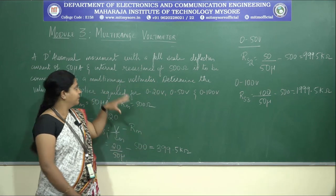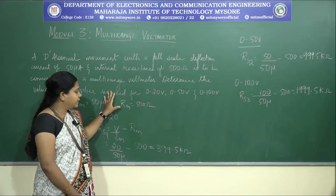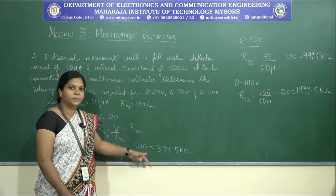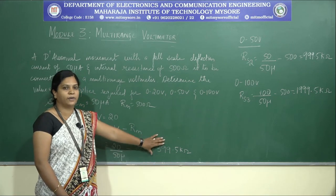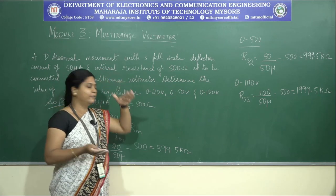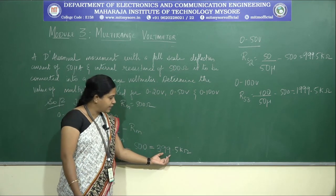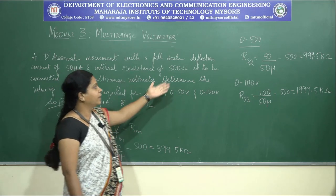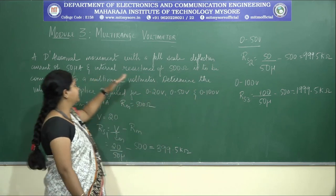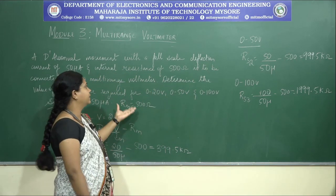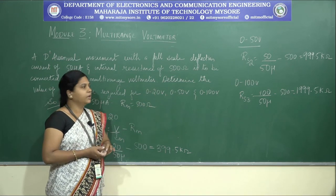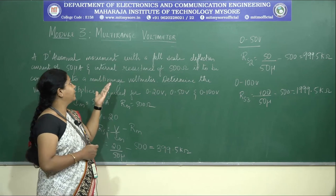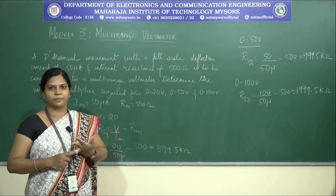As observed, the multiplier values are in kilo-ohms because high resistance limits the current flow, which is the purpose of the multiplier. These are the different multiplier values for a multi-range voltmeter. This completes module 3, covering the basic principles of measurement, multi-range ammeters, and multi-range voltmeters. Thank you.